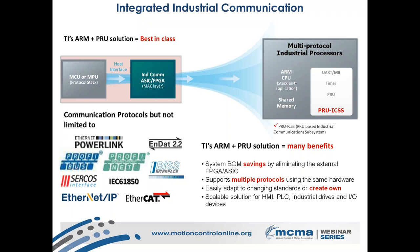The obvious benefit is one single SoC providing the complete solution instead of a two-chip or multi-chip solution for multiple protocols. The added advantage is that it is easily adaptable to changing standards, impacting the longevity of system solutions. It scales across the IO level, control level, or HMI level leveraging the graphics accelerator, providing scalability from both a processor core and application standpoint. The PRU ICSS is software programmable, making it flexible to enhance and add more communication protocols going forward.